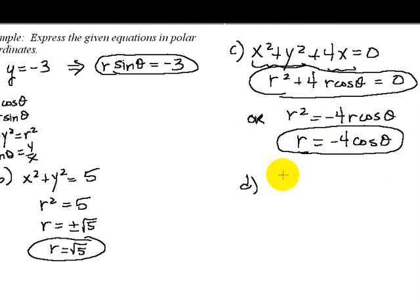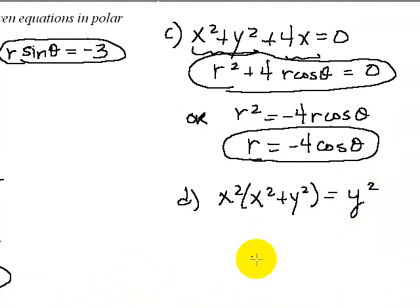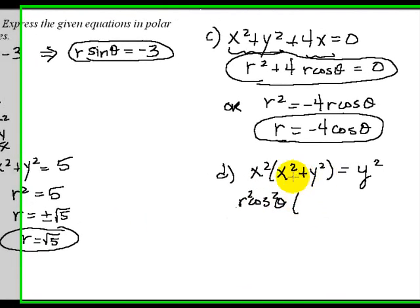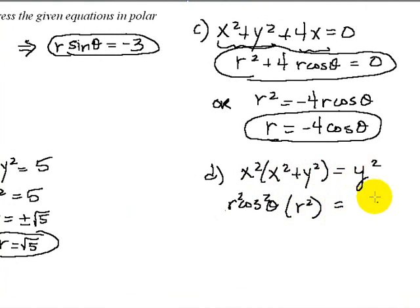Part D, we have X² times the quantity X² plus Y² is equal to Y². Well, X² would be the same as saying R squared cosine squared, or rather, R² cosine² θ. Well, X² plus Y² is R², and Y² would be R sine θ squared, or R² sine² θ. Well, a pair of R²s cancels out, leaving us with R² cosine² θ equals sine² θ.